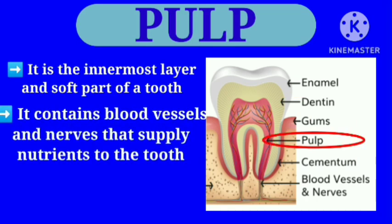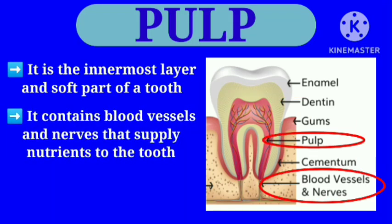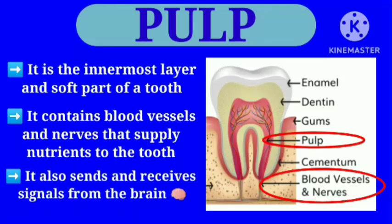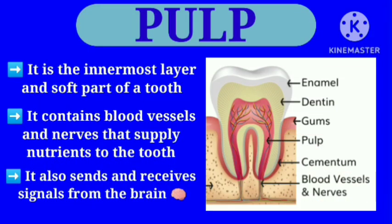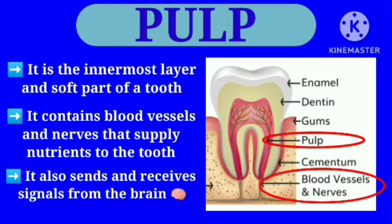Pulp is the innermost layer and soft part of a tooth. It contains blood vessels and nerves that supply nutrients to the tooth. It also sends and receives signals from the brain.